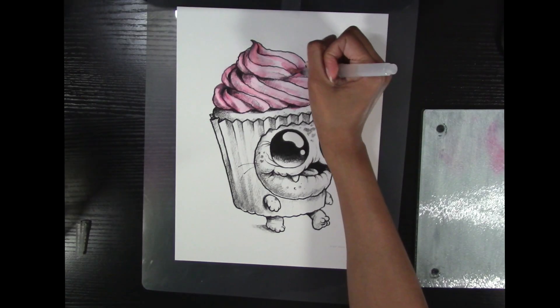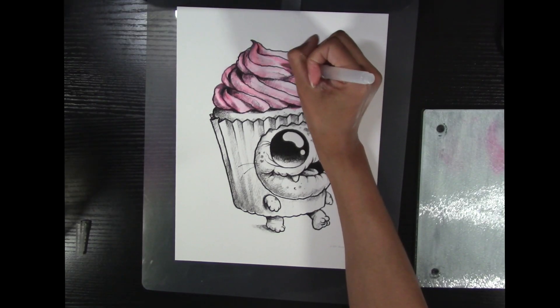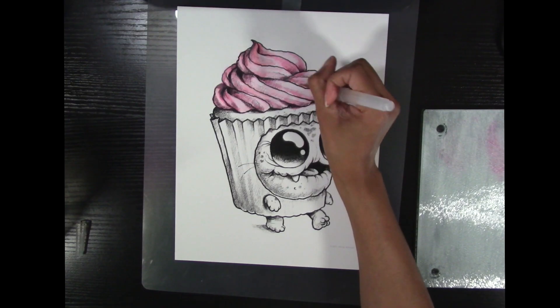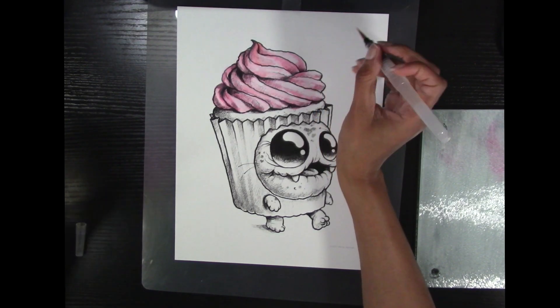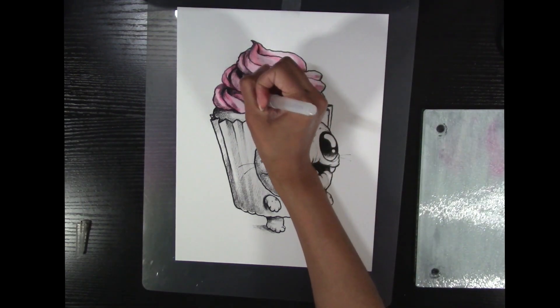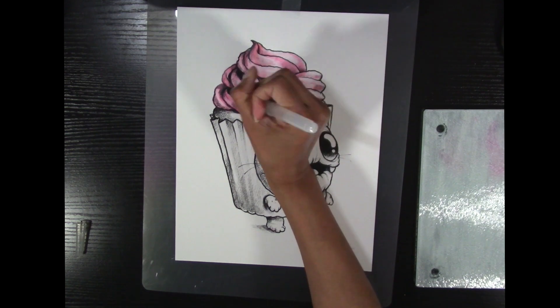Number two: a pattern of unstable and intense interpersonal relationships characterized by alternating between extremes of idealization and devaluation. This pattern is known as splitting and it is a key characteristic of borderline personality disorder.